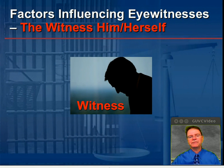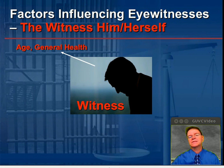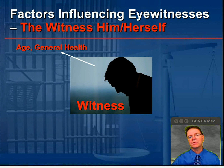There are also factors that influence the eyewitness with respect to the witness themselves. For example, what about their age? Witnesses that are very young, such as young children, may tend to fabricate or make stories up as part of retelling an incident surrounding a crime. Older people may be able to focus on the details of an incident very well, but their vision may not be as good as someone 10 or 15 years younger. The general health of that witness also makes a difference — if they have a drug problem or are distracted by not feeling well, these are all factors that will influence their ability to remember.